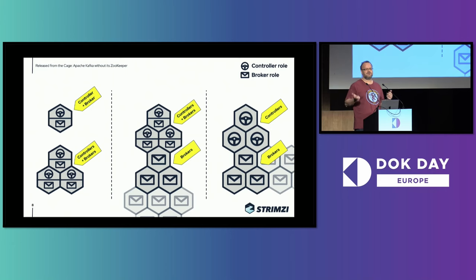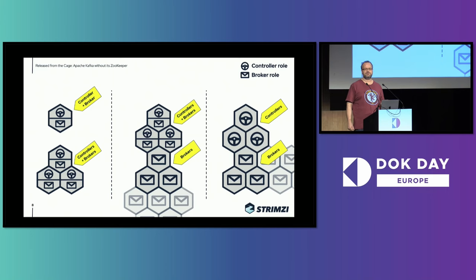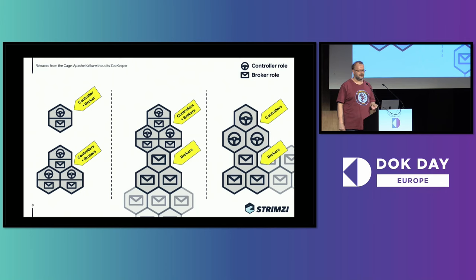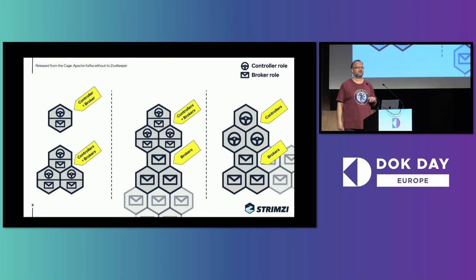In Strimzi, we really want to support all of these architectures because we have users using Strimzi for all these different things and in different environments. We also want to allow transitions between them, which is quite important if you want to start small but maybe grow your Kafka cluster as your project, product, or company grows.